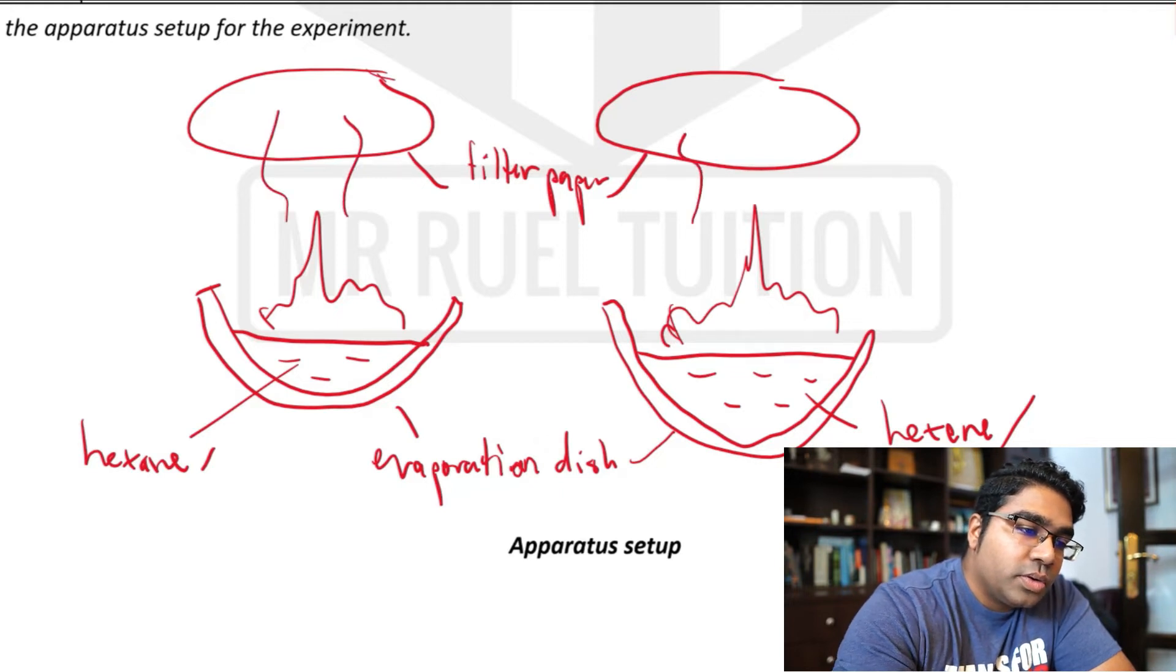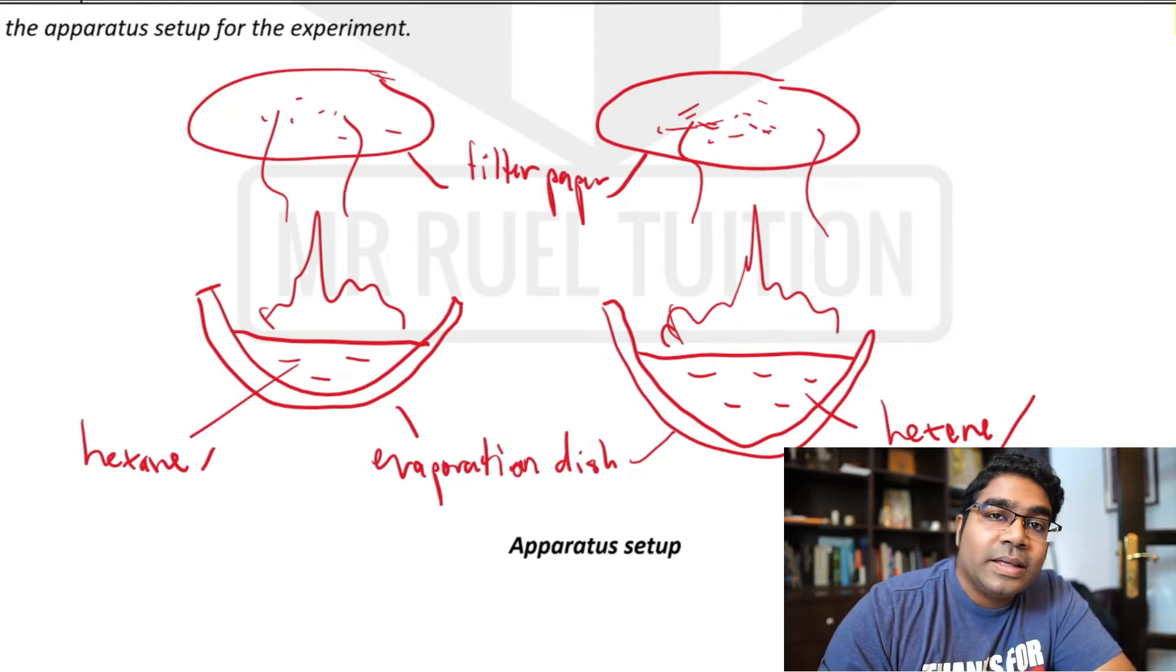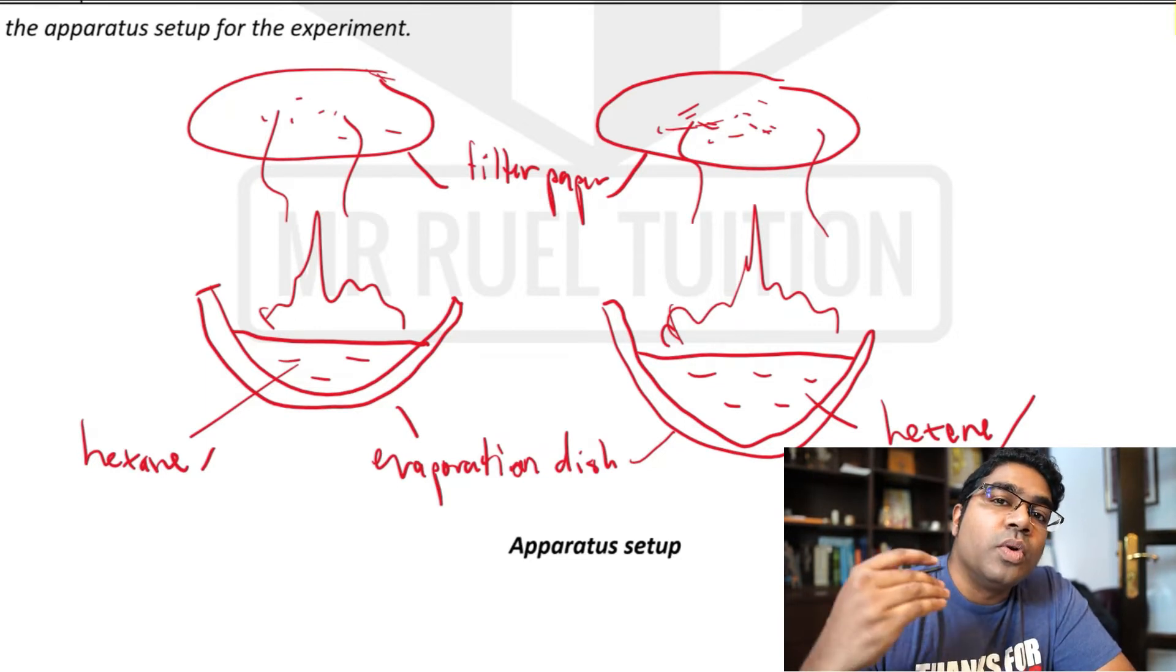And then the smoke will go to the filter paper, and the filter paper will start to become black. And so the one that is more black means that the flame was more sooty.